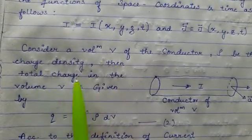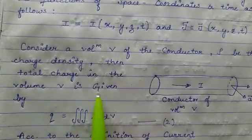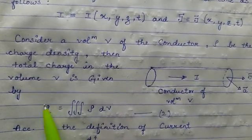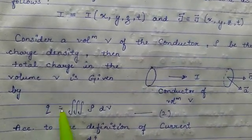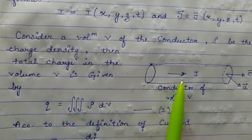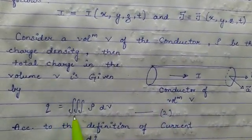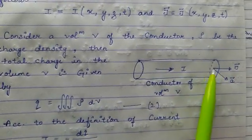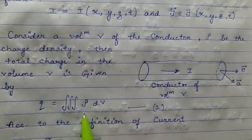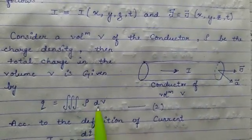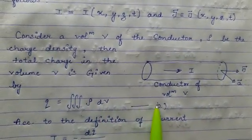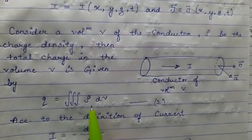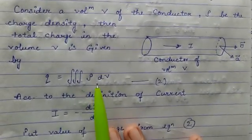— or the total charge in the volume is given by: Q is equal to the triple integral of ρ dV. Write it as equation number 2. According to the definition of current, the rate of flow of charge — the current through the conducting cylinder —